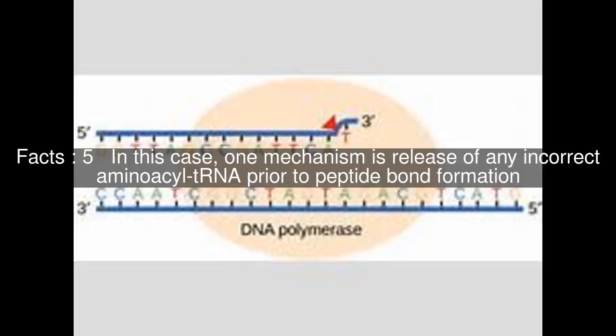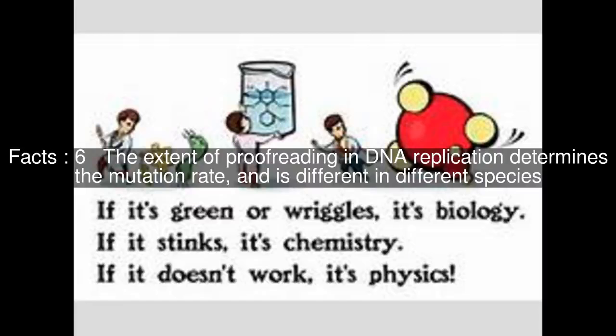In this case, one mechanism is release of any incorrect aminoacyl-tRNA prior to peptide bond formation. The extent of proofreading in DNA replication determines the mutation rate, and is different in different species.